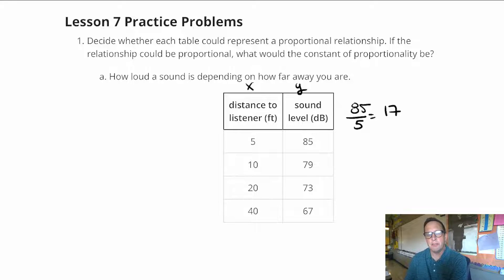Now, if that 17 happens every time I divide the Y by the X, then we're on to something. 79 divided by 10 is 7.9. So I'm not even going to go any further here.